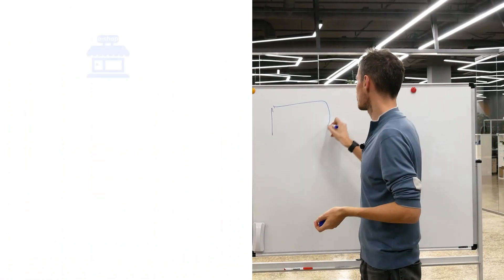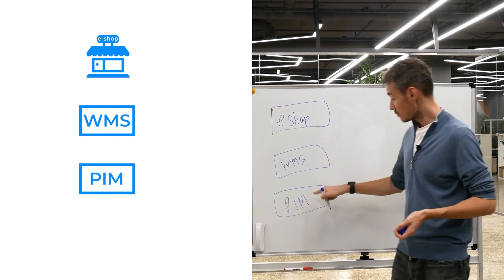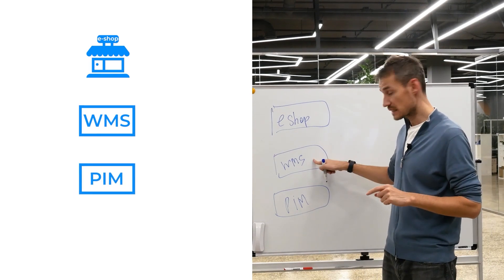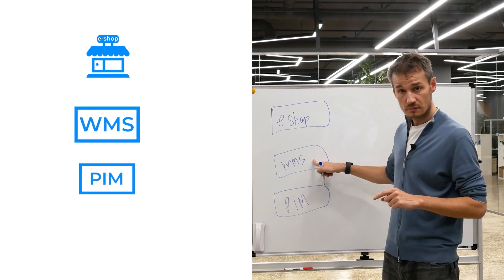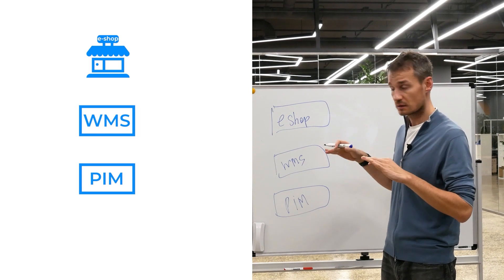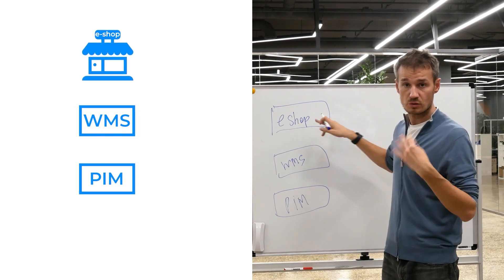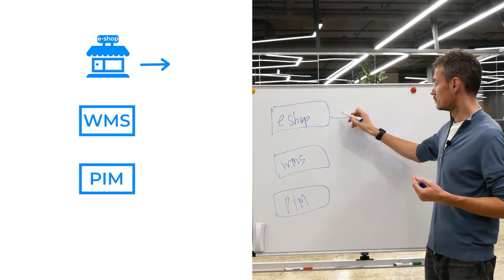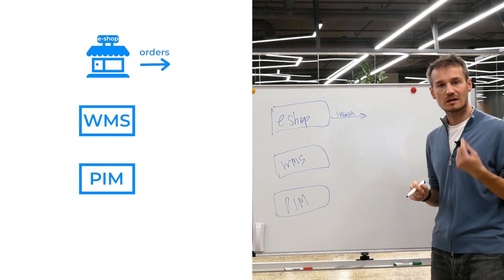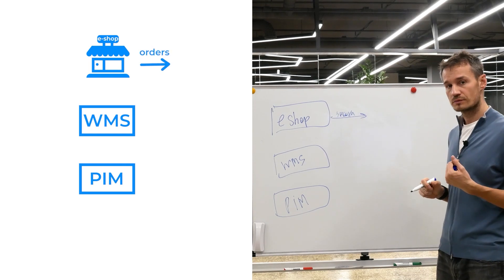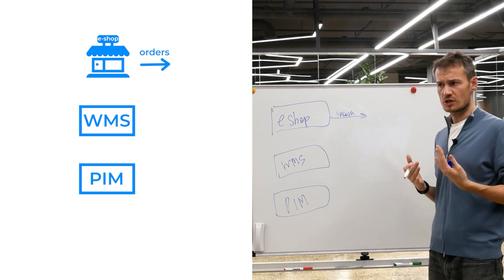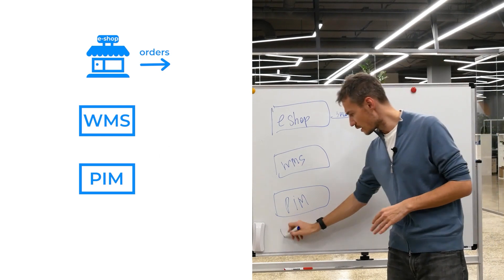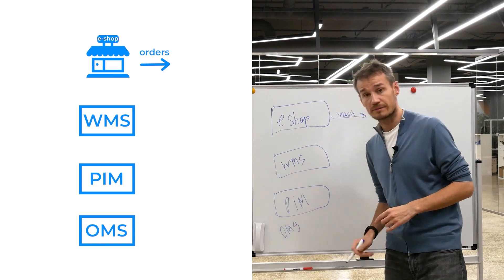Let me give you an example. Here we have product information and product cards. Here we have what's in stock and what's not. And here orders are created. If we receive orders from the eShop, should we store them in a message broker? On the one hand, we should — so an OMS system will be able to use it directly from the message broker.